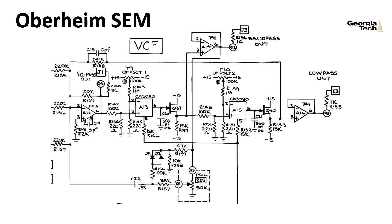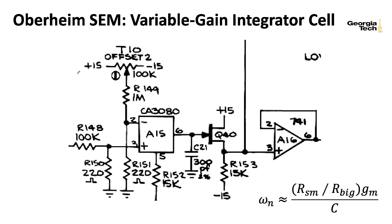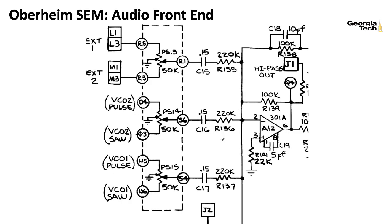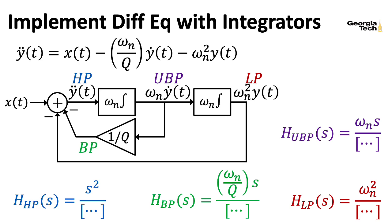Let's go back and take a look at the original Oberheim SEM circuit. Notice that all of the inputs here are going to the negative terminal. So the voltage-controlled filter in the Oberheim SEM is overall an inverting filter — all of the transfer functions have a minus sign. Now, this filter structure is fairly generic. You could implement these blocks in a number of different ways.